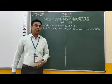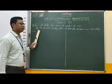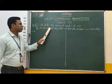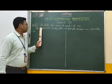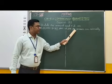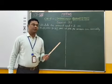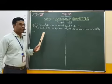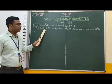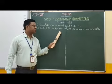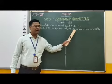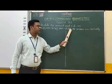Good morning students. In this video we are going to solve sub-question B of question number 1 from exercise 8.3. The question is: calculate the amount and compound interest on rupees 18,000 for 2.5 years at 10% per annum, compounded annually. Per annum means per year.